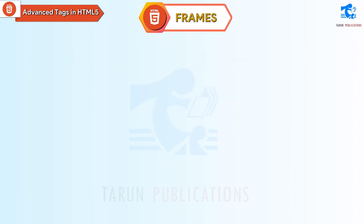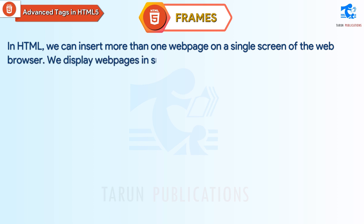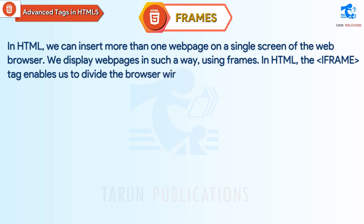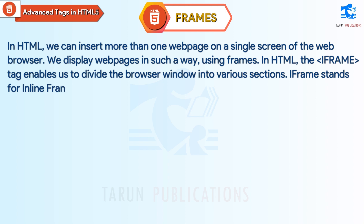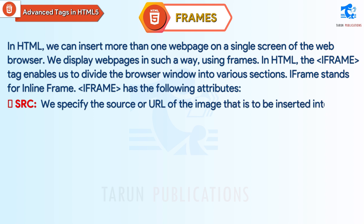Frames: In HTML, we can insert more than one webpage on a single screen of the web browser. We display web pages in such a way using frames. In HTML, the iframe tag enables us to divide the browser window into various sections. Iframe stands for inline frame. Iframe has the following attributes. SRC: We specify the source or URL of the webpage that is to be inserted. Height: We specify the height of the frame using this attribute.